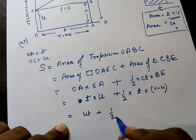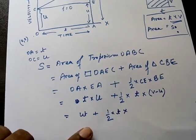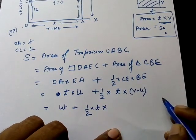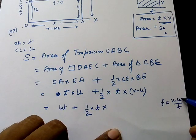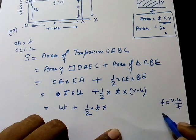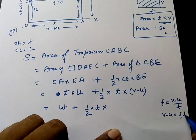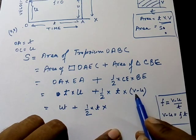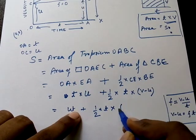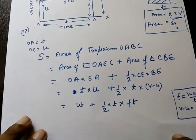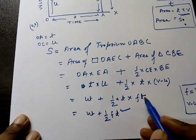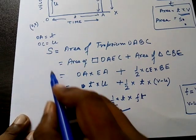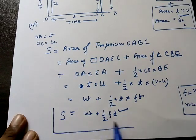Rearranging: ½ × t × (v − u). We know from the definition of acceleration that f equals (v − u) divided by t, so by cross multiplication v − u equals ft. Substituting, we get ½ × t × ft = ½ft². Adding the two areas: S = ut + ½ft².